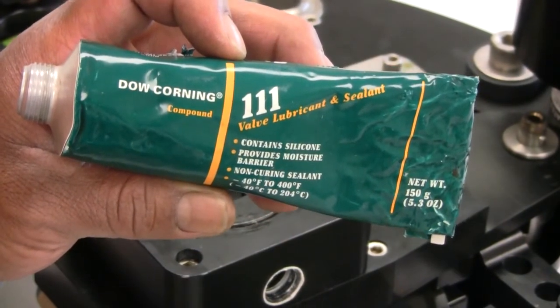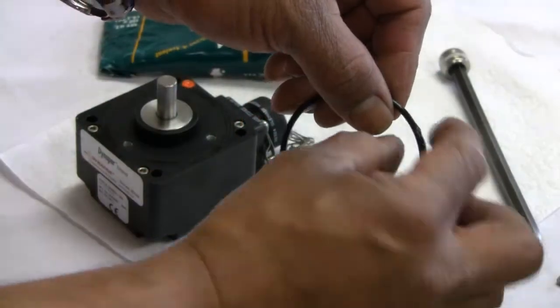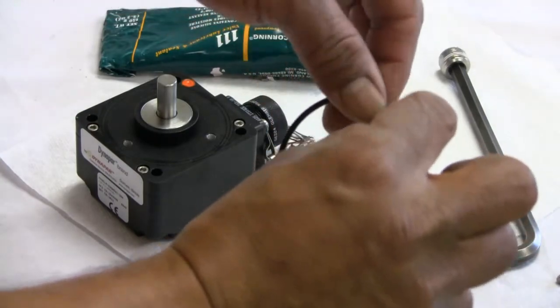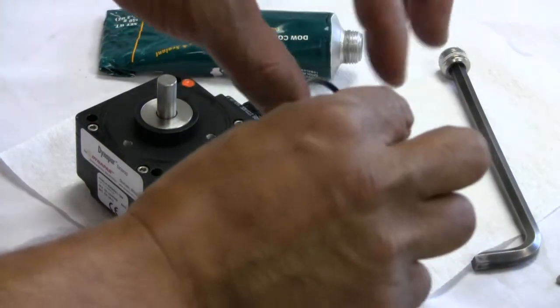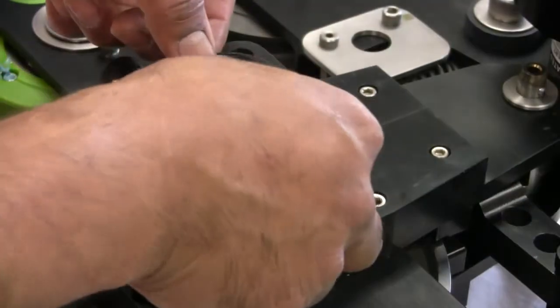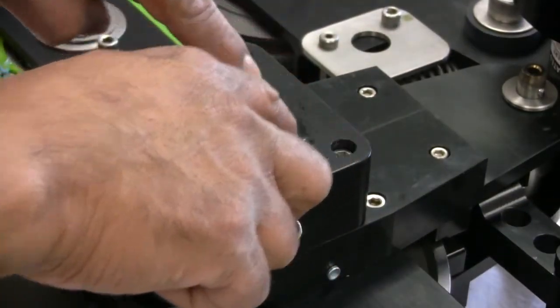Lubricate the rubber seal using DC-111 or similar product. Be careful not to damage the rubber seal. Replace the seal on the adapter body.